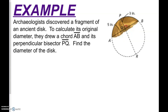Let's do the applied example first. An archaeologist discovered a fragment of an ancient disk — a circle — and you can see that fragmented part in brown. To calculate its original diameter, they drew chord AB and the perpendicular bisector. Since it's the perpendicular bisector, that must be the diameter of the circle, and it comes down to the chord perpendicular and cuts it in half. So if AQ is 5, then the other half is also 5.